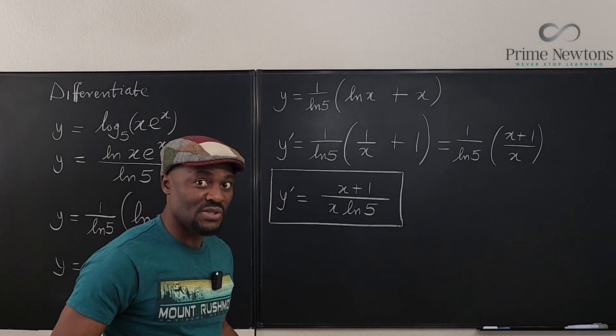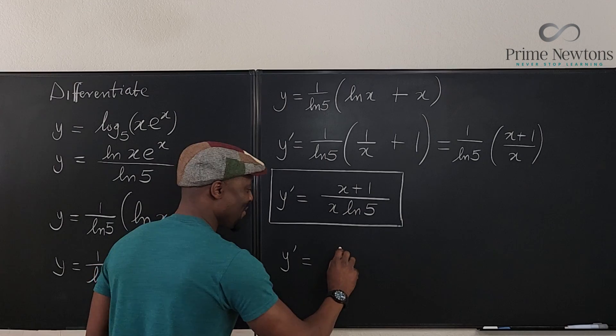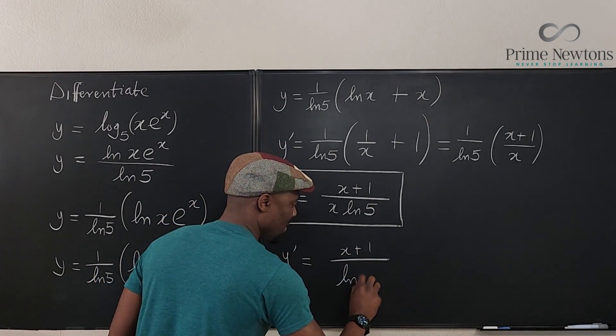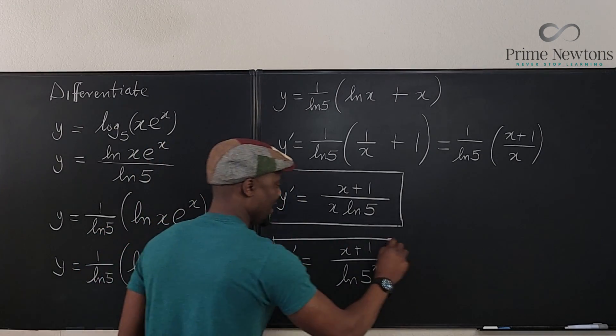Now, if you want to surprise yourself, you can write your answer this way. Y prime equals x plus one over the natural log of five raised to power x. That looks wicked.